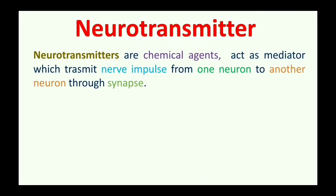Hello friends, welcome back to our channel Key Pharmacy. We will discuss neurotransmitters. What is a neurotransmitter? Neurotransmitters are chemical agents that act as mediators which transmit nerve impulses from one neuron to another neuron through a synapse. These are called neurotransmitters.